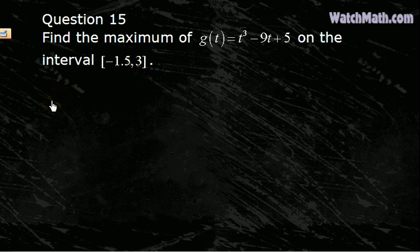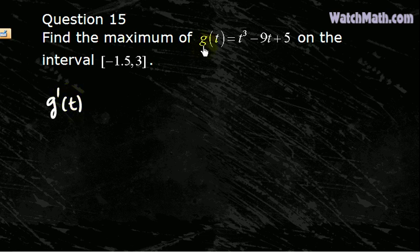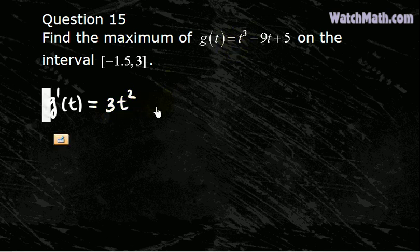So first we find the critical points for g. Take the derivative of g, which is equal to 3t² minus 9.